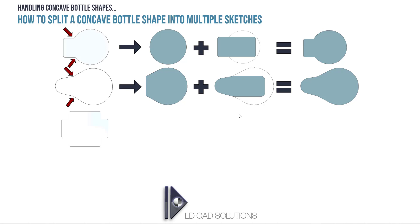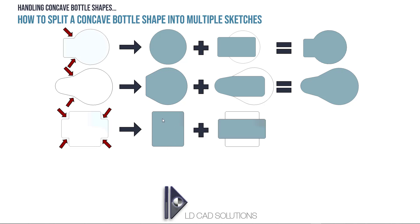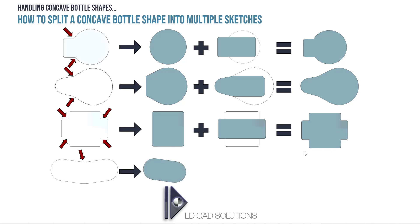Let's look at another example — this cross-shaped bottle. We've got four concave areas here that we need to deal with. You can guess how this one's done: two radiused rectangles, no problem. We combine those together and we get a perfect fit with the bottle — so two sketches in that case as well.